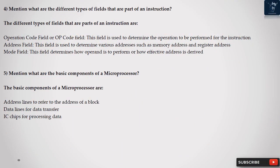Question 4: Mention what are the different types of fields that are part of an instruction? The different types of fields that are parts of an instruction are: Operation Code Field or Op Code Field: this field is used to determine the operation to be performed for the instruction. Address Field: this field is used to determine various addresses such as memory address and register address. Mode Field: this field determines how operand is to perform or how effective address is derived.